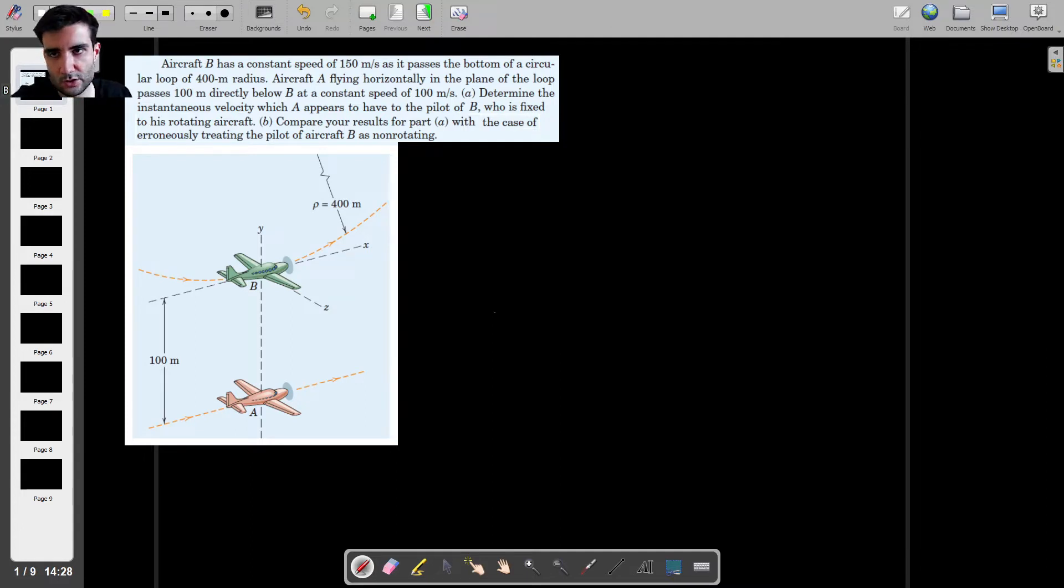In other words, for part B, we're going to treat aircraft B as having a constant velocity of 150 meters per second, and not just a constant speed. But we'll get to that a bit later.